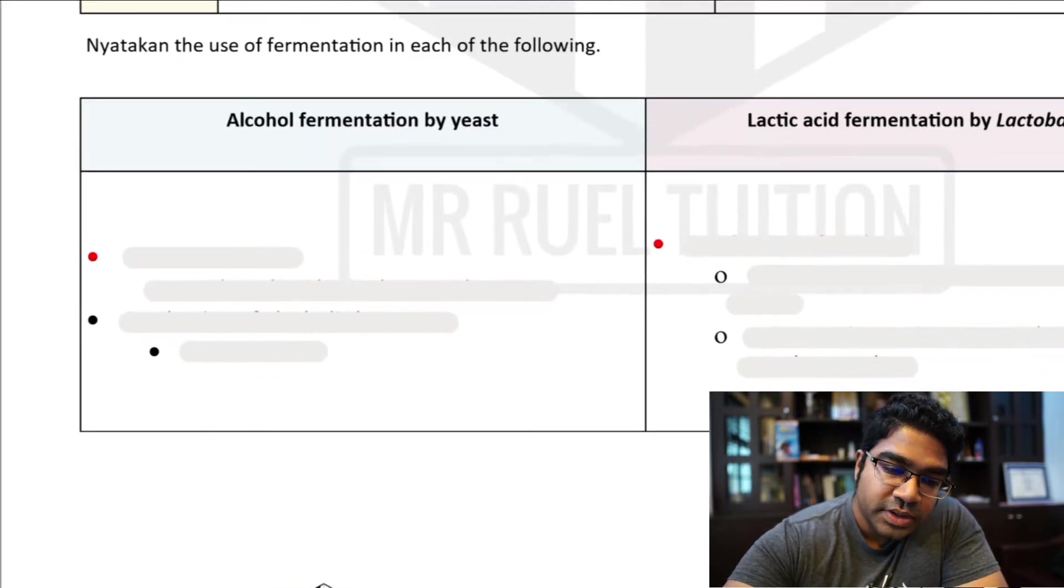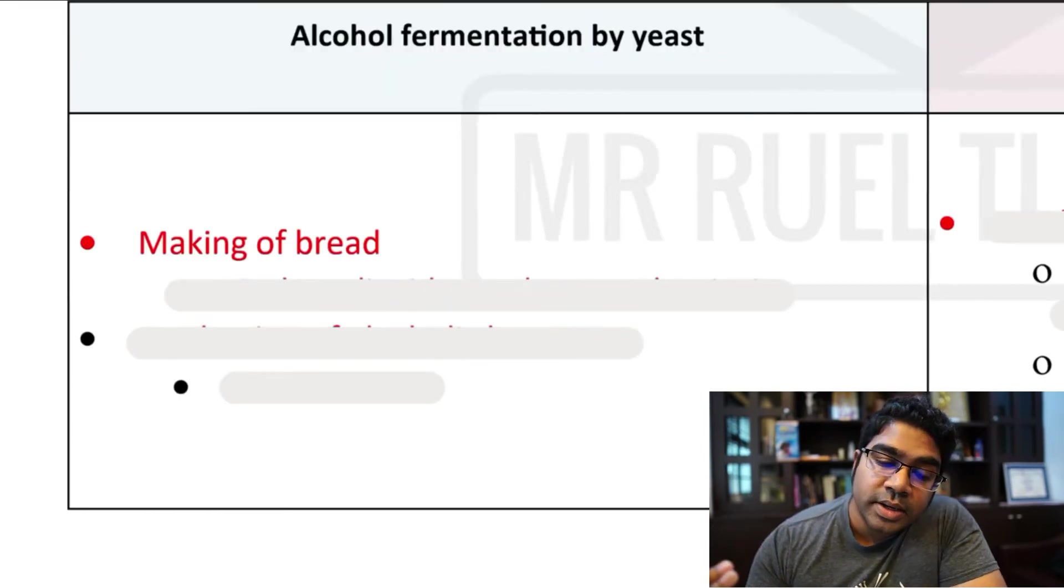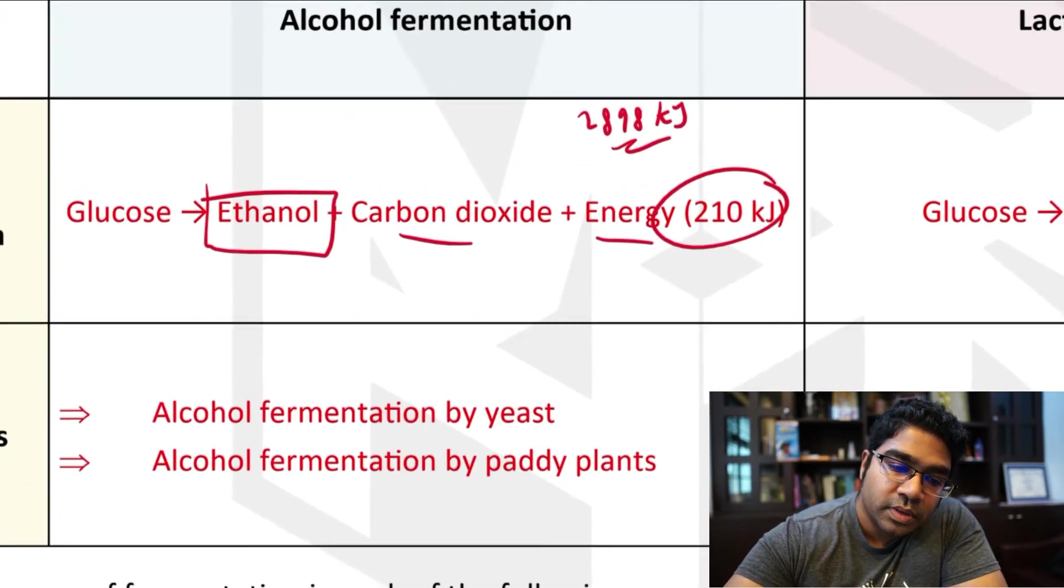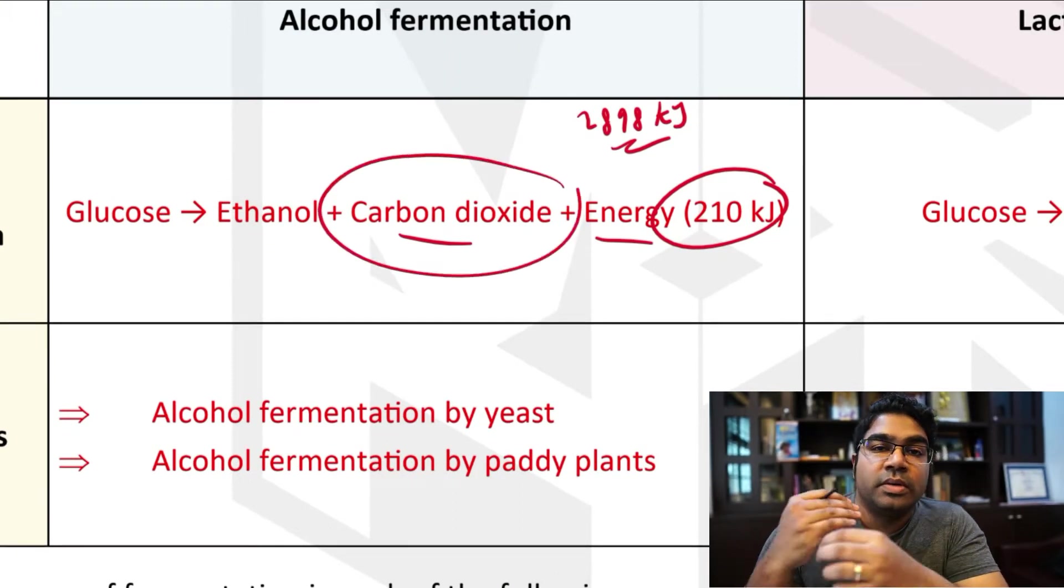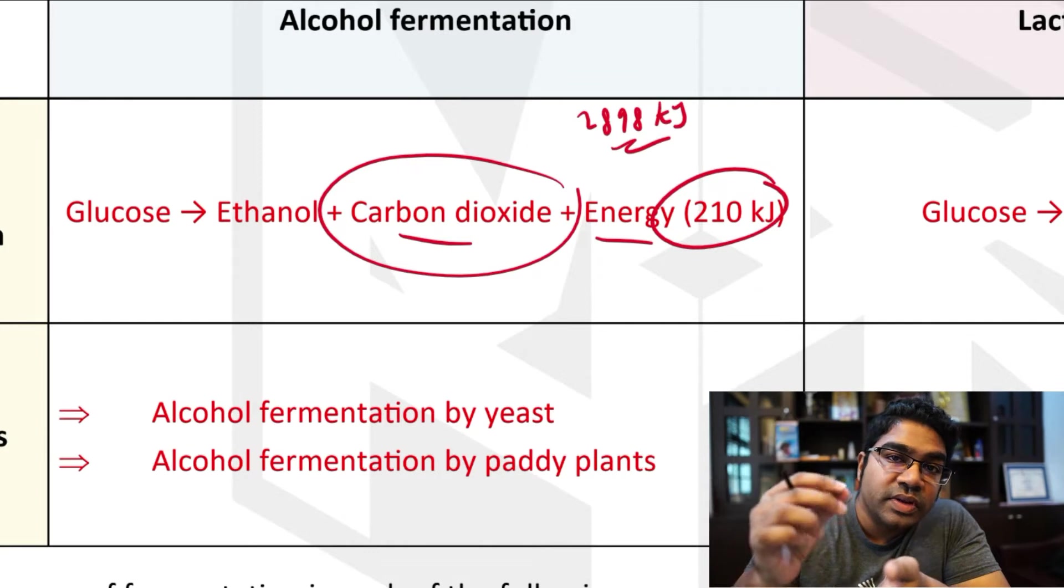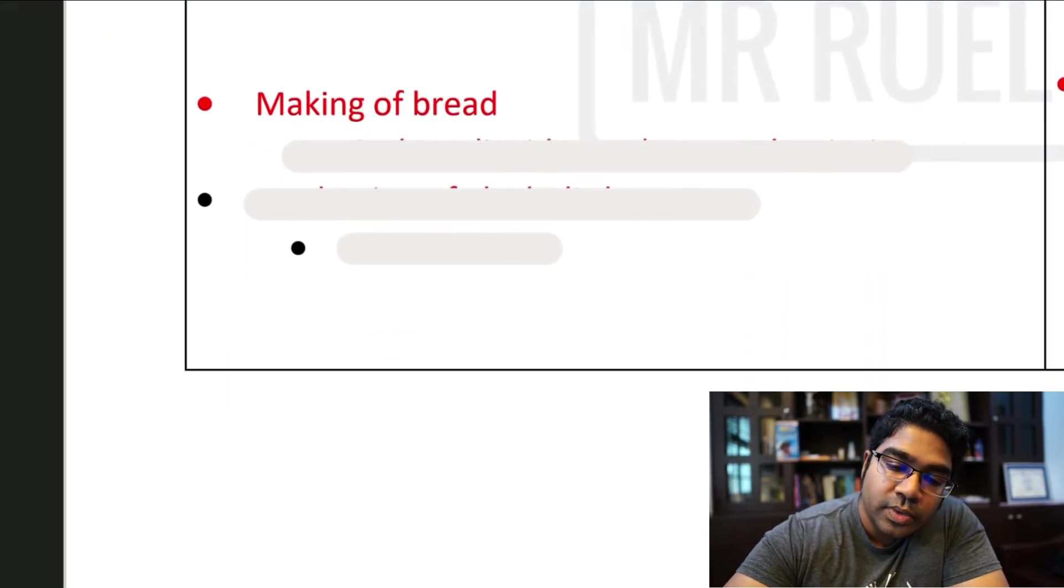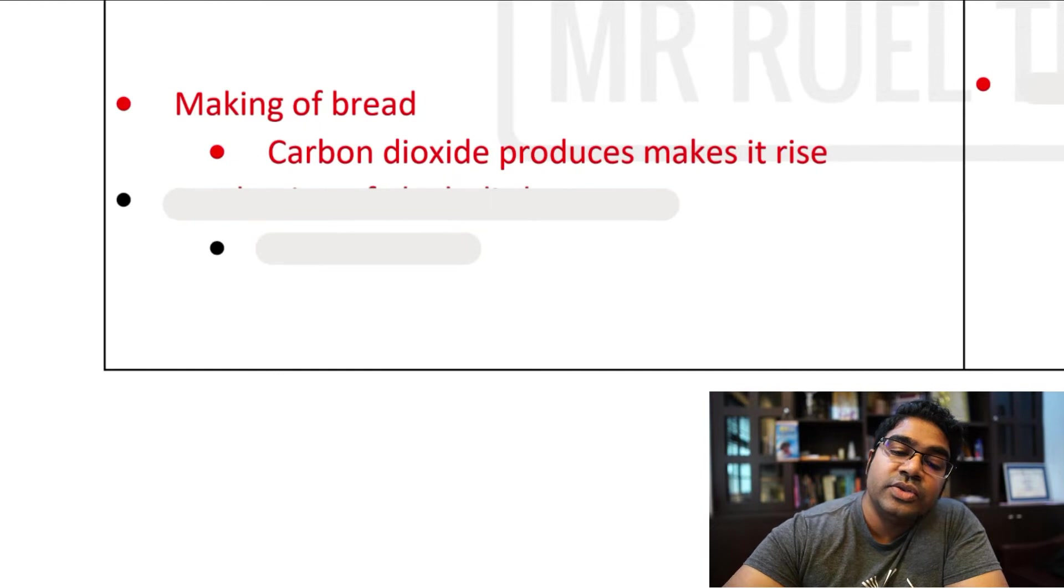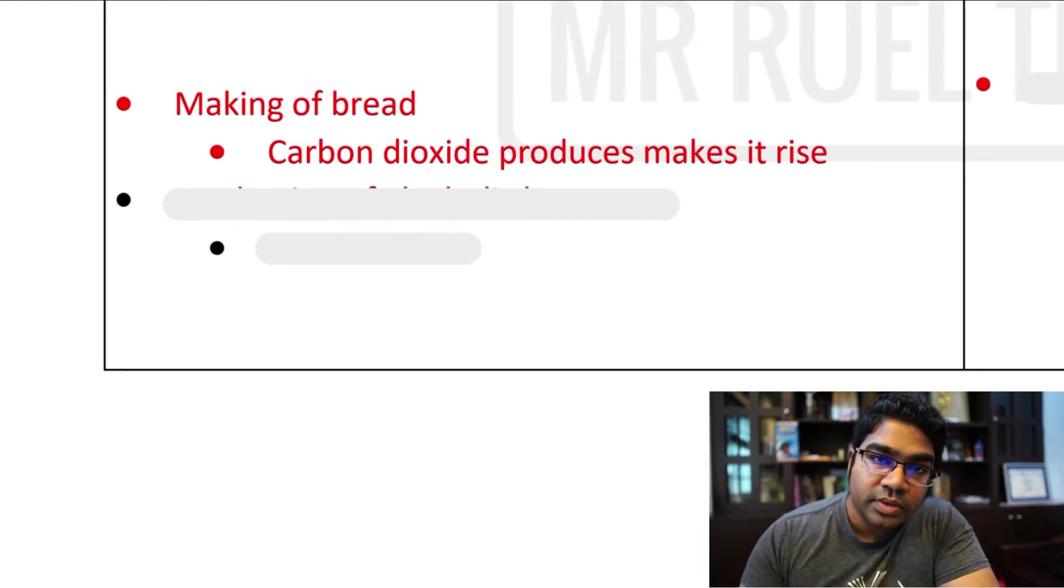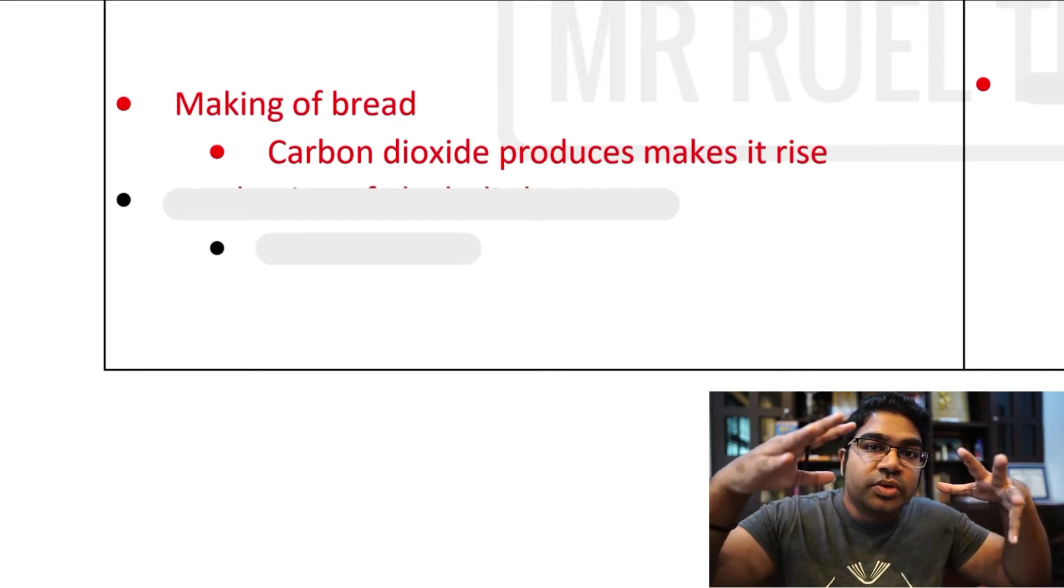We'll look at each one. First, let's look at alcohol fermentation by yeast. It is used in the making of bread because this process produces carbon dioxide. The addition of yeast in making bread actually causes the bread to rise. This is because the carbon dioxide that is released during the fermentation process will expand within the dough and cause the dough to rise.